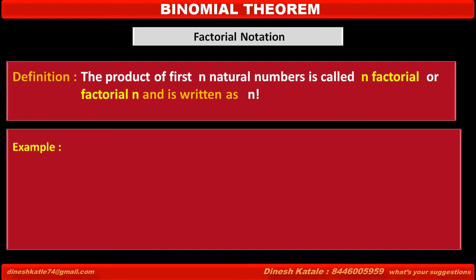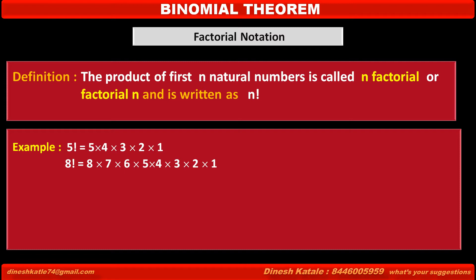For example, 5 factorial is equal to 5 × 4 × 3 × 2 × 1 — the product of numbers from 1 to 5. A second example: 8 factorial is equal to 8 × 7 × 6 × 5 × 4 × 3 × 2 × 1 — the product of numbers from 1 to 8.